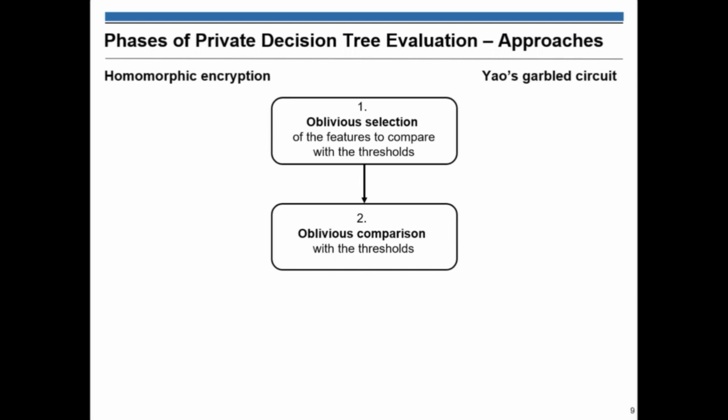You do the comparison of the threshold and the features in oblivious fashion. And you get a result. And then, based on the result, you want to evaluate the path from the root to the classification node and just receive the result of the classification.